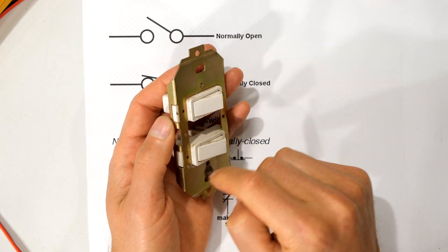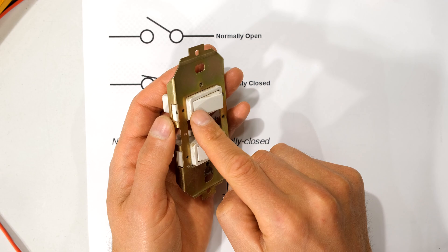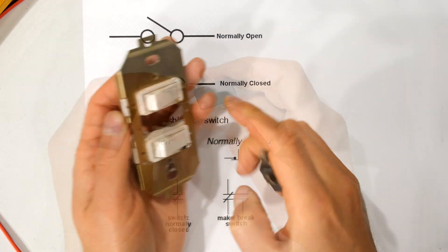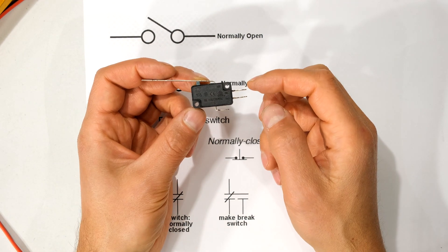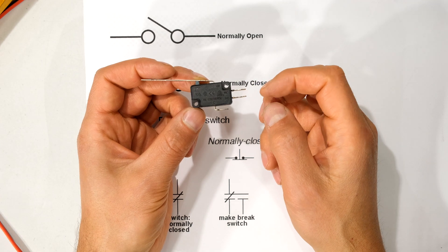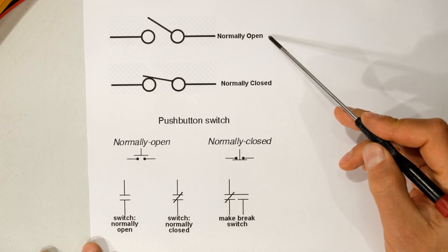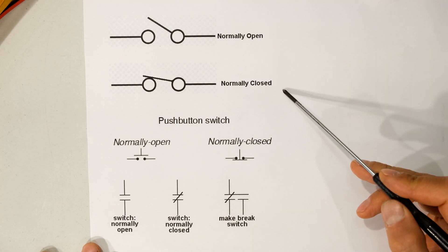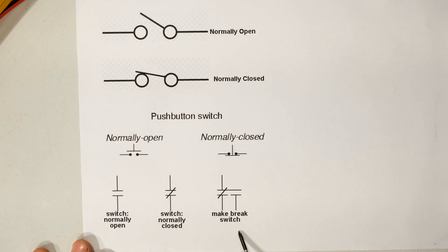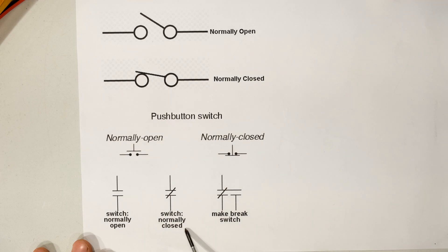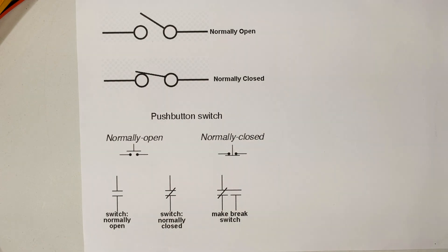To sum up: the latching switches are not momentary switches because they latch. The push button and limit switch, on the other hand, are momentary switches with normally closed and normally open connections. Here are the symbols — normally open and normally closed — and in control systems we use these symbols to signify a normally open and a normally closed switch. Thanks for watching.